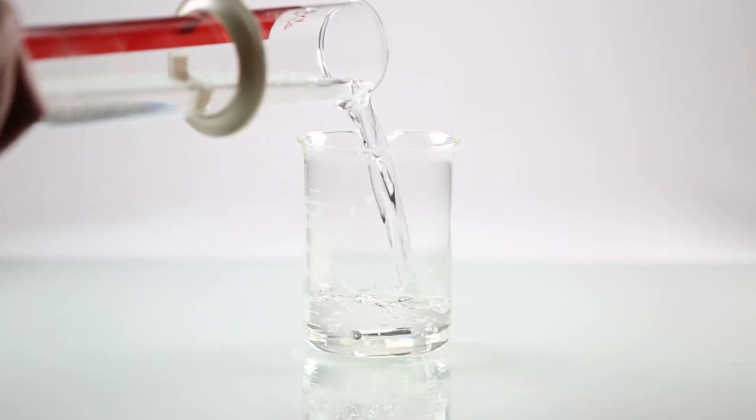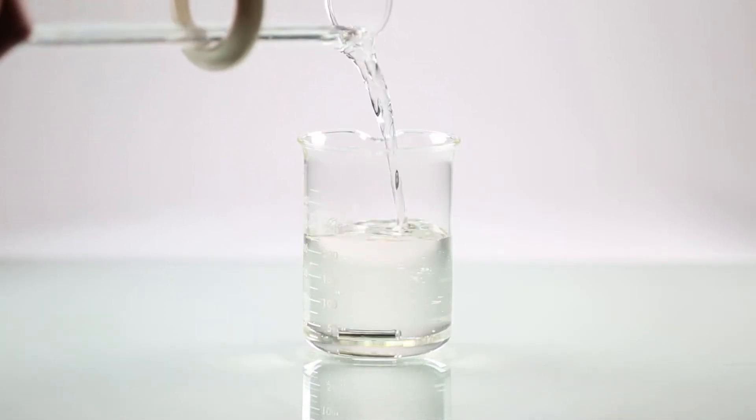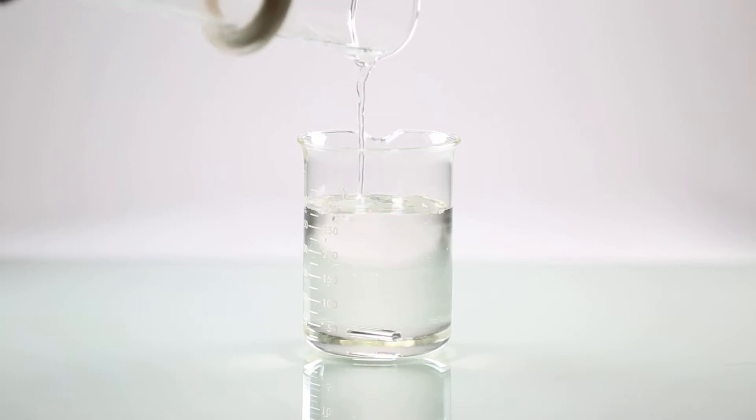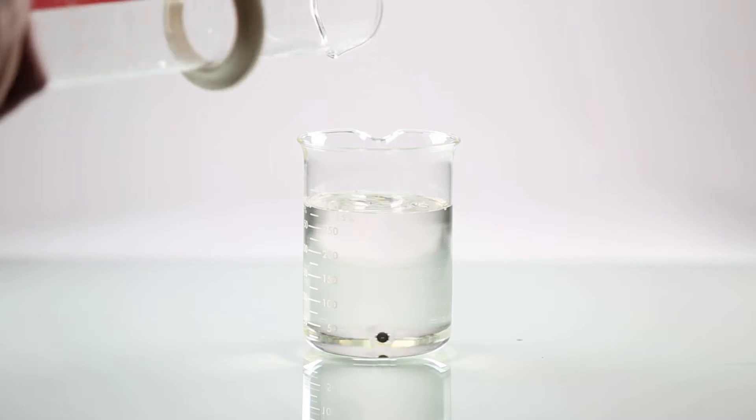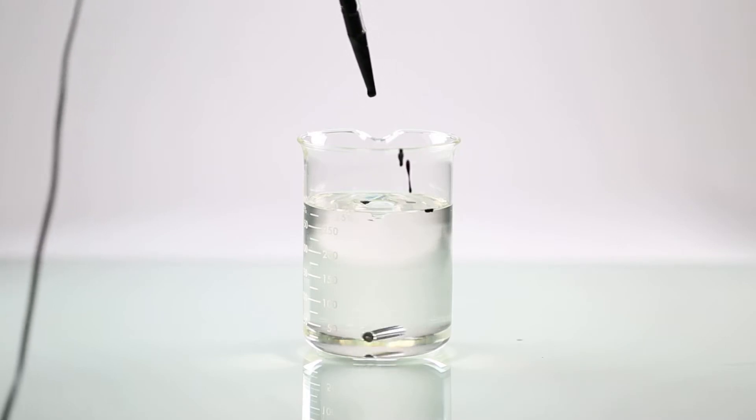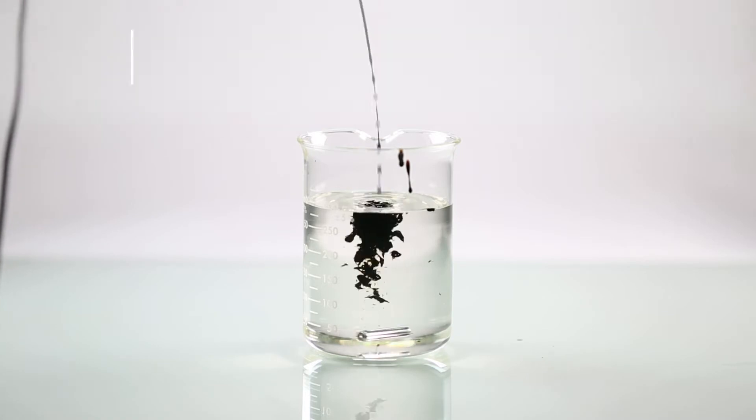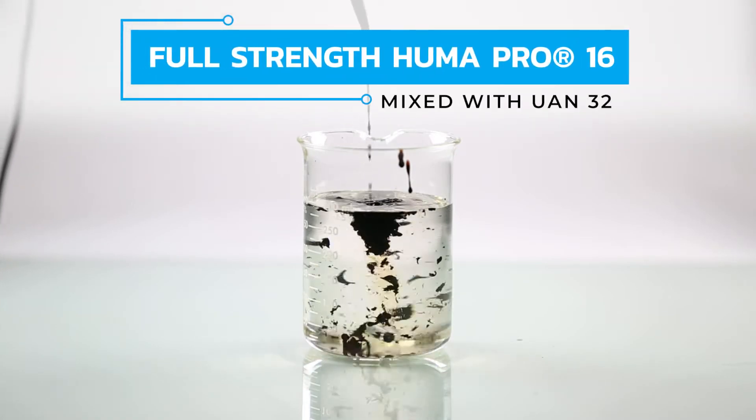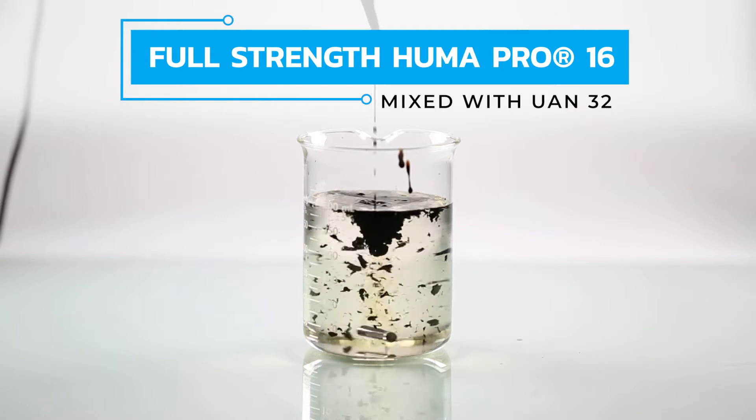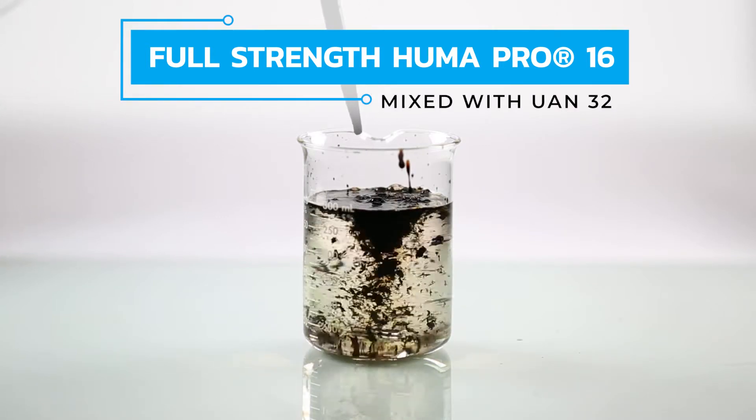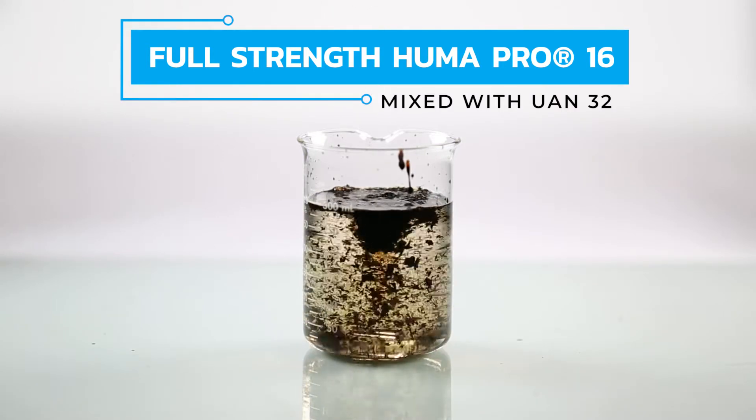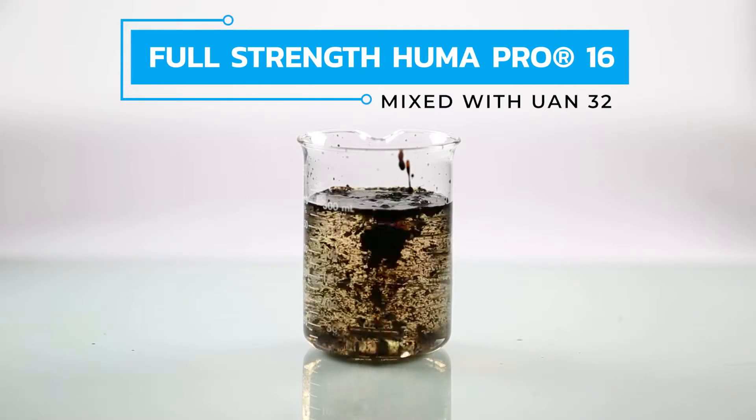Things get more complicated, though, when mixing with other agrochemicals. One of the definitions that scientists use to define humic acids is that they are only soluble in water under alkaline conditions. This causes a problem when growers want to mix a liquid humic acid with other agrochemicals that are lower in pH than about 8 or 8.5. As you can see in this video where we're mixing Humapro 16 with the common nitrogen fertilizer UAN32, which has a pH of about 7, the liquid humic acid precipitates into little, and sometimes not so little, globules that can gum up irrigation equipment.